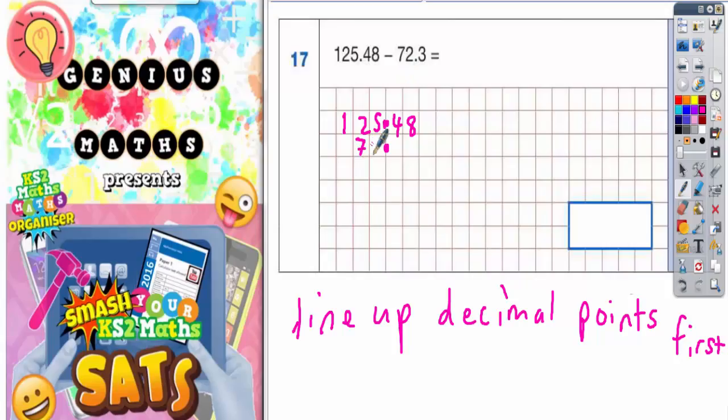And then we've got 72 before the point and 0.3 after the point. Obviously you'll see that there is a gap here, and any gaps we can fill in with zeros. So there's a zero that can go underneath the 8 there, and we are subtracting.